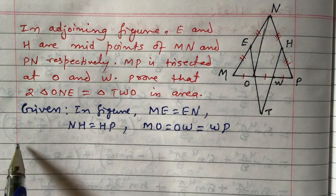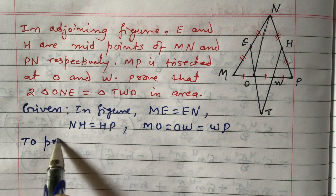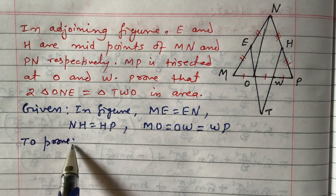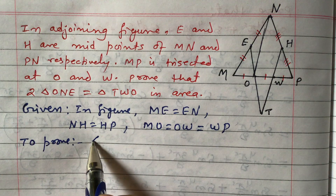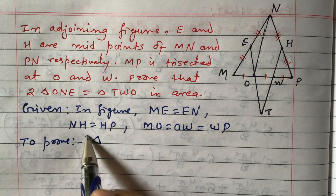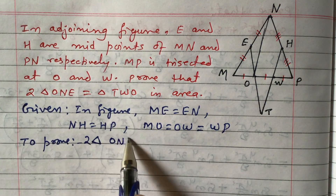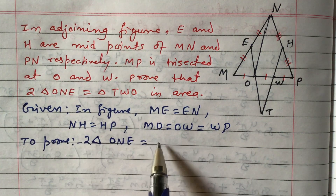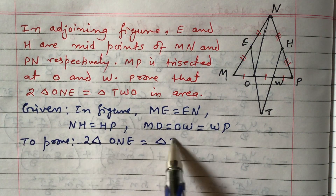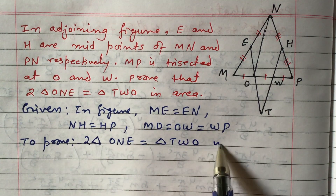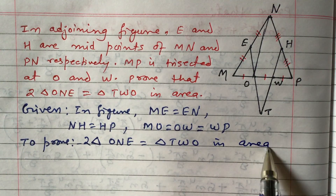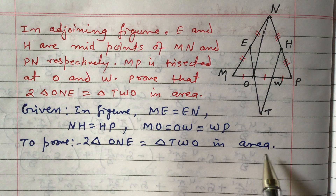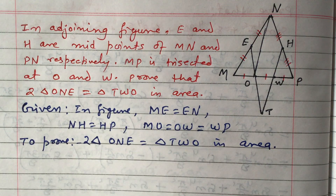To prove: two times the area of triangle ONE equals the area of triangle TWO. This is what we need to prove.